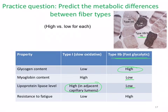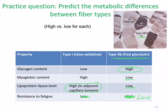Since fatty acids have to be oxidized in mitochondria, which the fast glycolytic fiber types have few of, they have little use for lipoprotein lipase, whereas this enzyme is high in the capillaries of the type 1 slow oxidative fibers. The fast glycolytic fibers also have a low resistance to fatigue — they fatigue quickly — whereas the slow oxidative fibers have a high resistance. Sorry about that mistake.